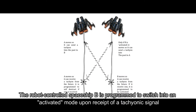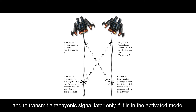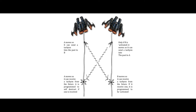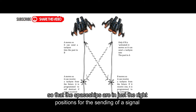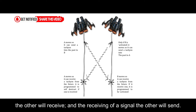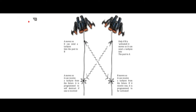The robot-controlled spaceship B is programmed to switch into an activated mode upon receipt of a tachyonic signal, and to transmit a tachyonic signal later only if it is in the activated mode. In addition, the motions of the spaceships and timing of the emissions are all carefully pre-programmed so that the spaceships are in just the right positions for the sending of a signal the other will receive, and the receiving of a signal the other will send.